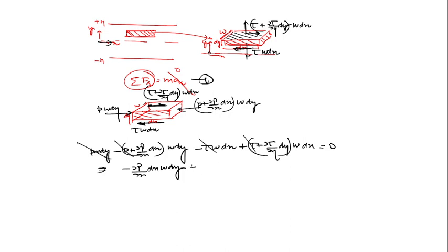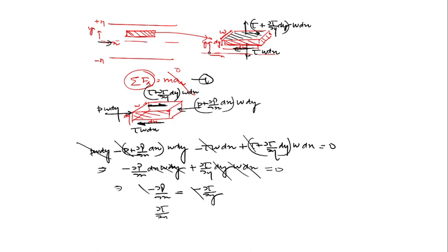Simplifying, we get: del_tau over del_y equals del_p over del_x. Since the pressure gradient in fully developed flow is constant, del_p over del_x can be written as dp over dx, or equivalently as delta_p over l.